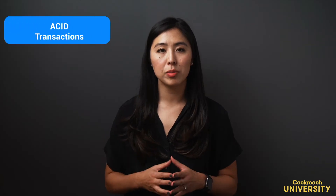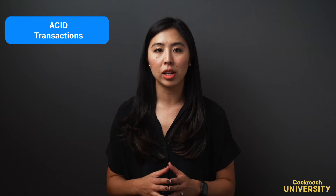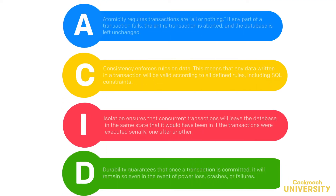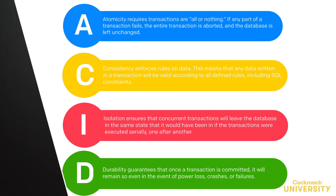Every transaction in CockroachDB guarantees ACID semantics spanning arbitrary tables and rows. There are no tunable guarantees — we offer the same strict guarantees at all times, even when data is distributed. This is extremely important since no single node is responsible for all of the data that affects a transaction, and all nodes participating in a transaction must agree on whether or not it should be committed.